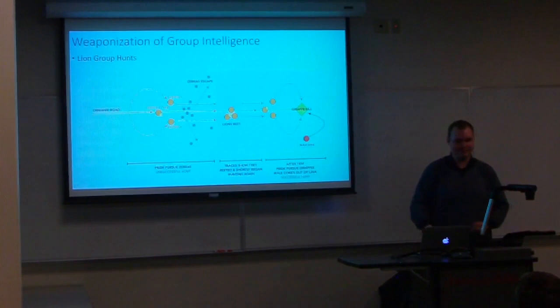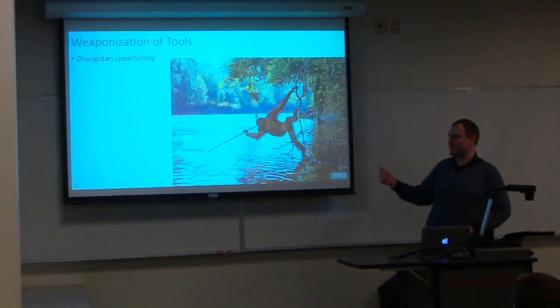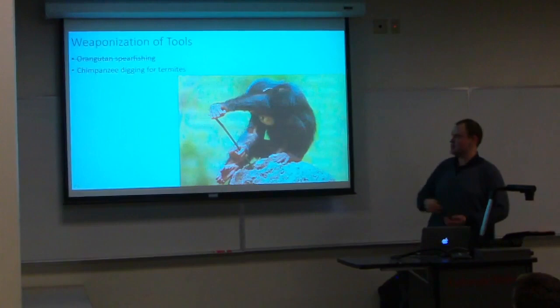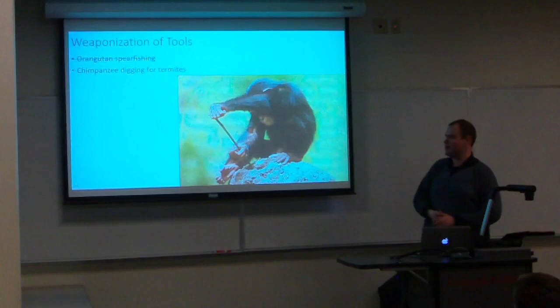Then we have the weaponization of tools, such as this interesting picture of an orangutan trying to spearfish — though that doesn't really count here because the orangutan was just mimicking locals it had seen spearfishing and never actually managed to spear a fish. A chimpanzee digging for termites using a stick is a true example of tool use, as this behavior was observed in chimpanzees who presumably had very limited human contact before the observation.